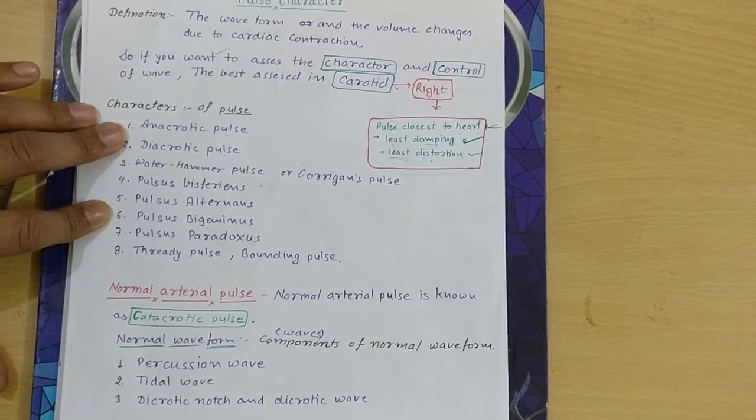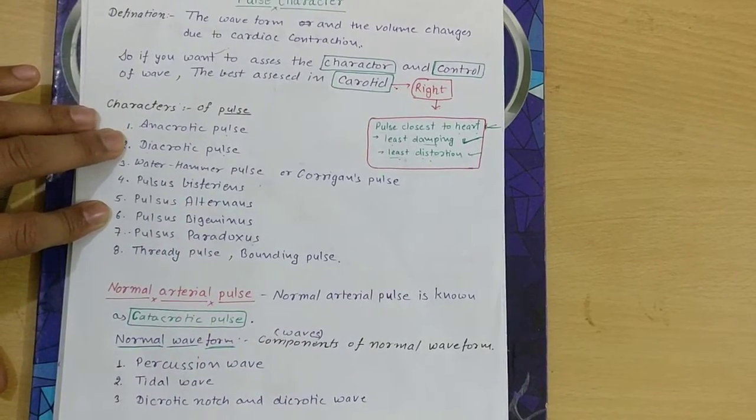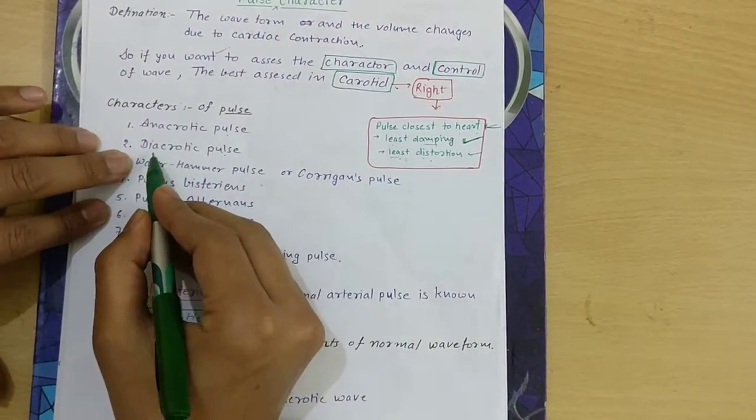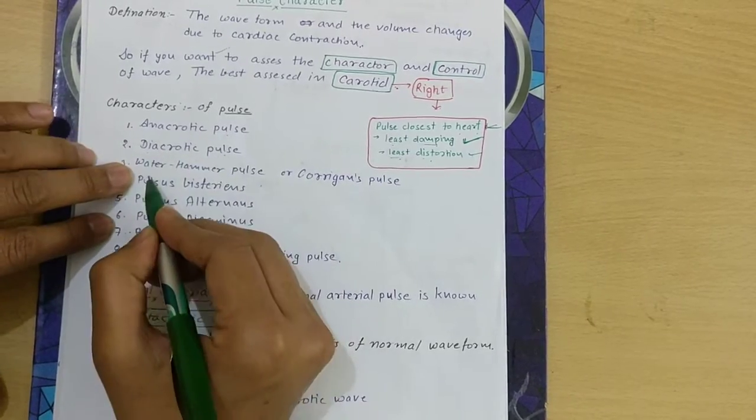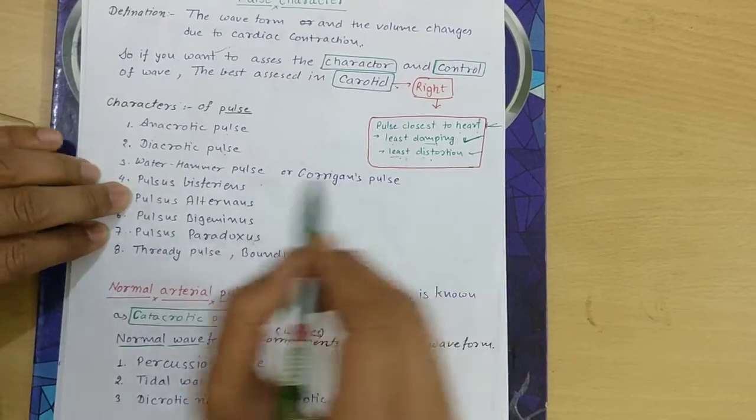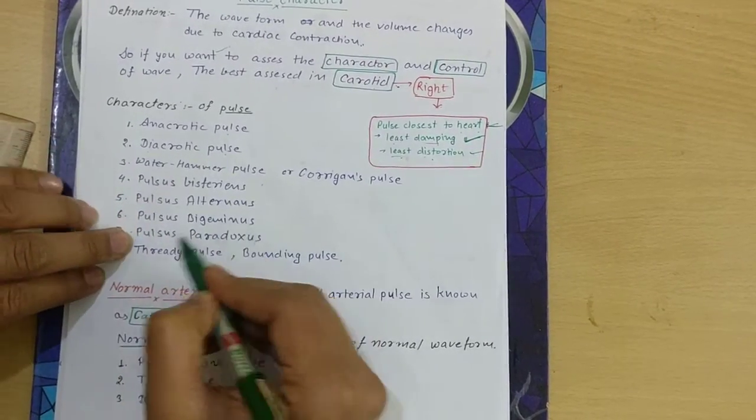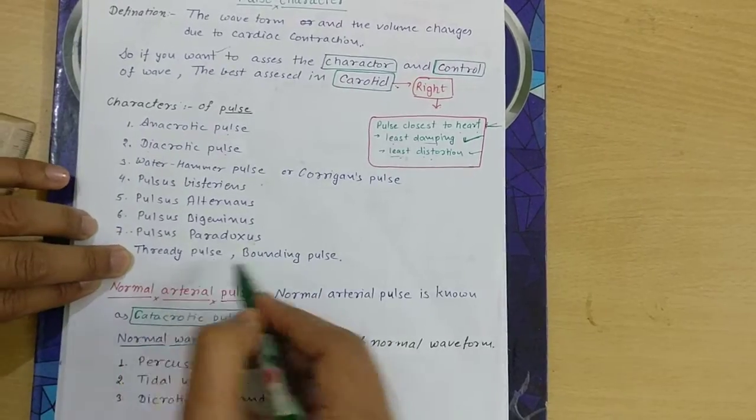If we discuss abnormalities of pulse character: first one is anachrotic pulse, then dicrotic, then water hammer pulse or Corrigan's pulse, pulsus bisferiens, pulsus alternans, pulsus bigeminus, pulsus paradoxus, threading pulse, and bounding pulse.